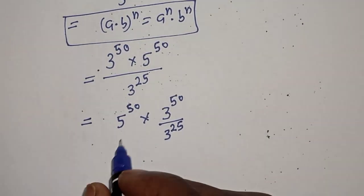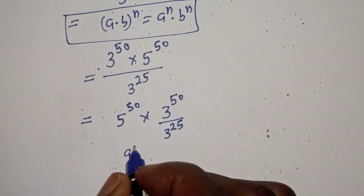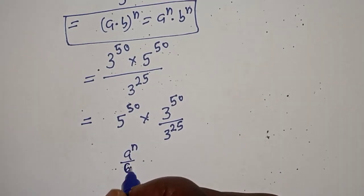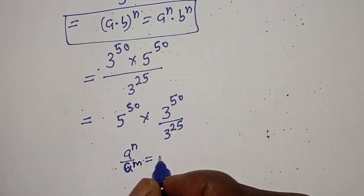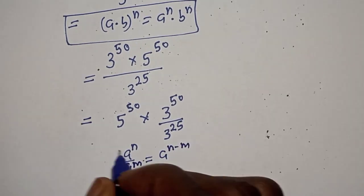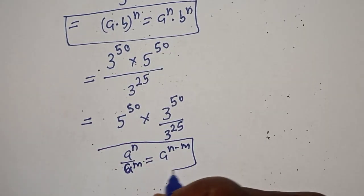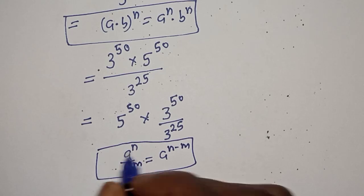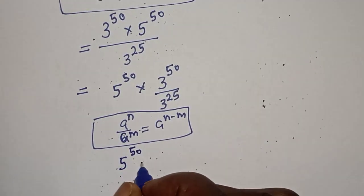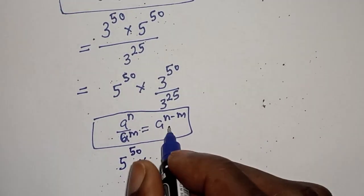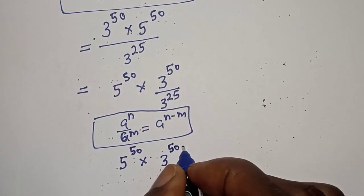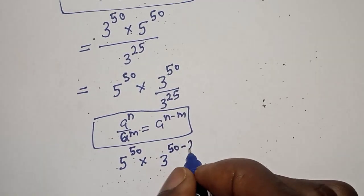Remember that if you have a raised to power n over a raised to power m, this is equal to a raised to power n minus m. So from here we have 5 raised to power 50 multiplied by 3 raised to power 50 minus 25.